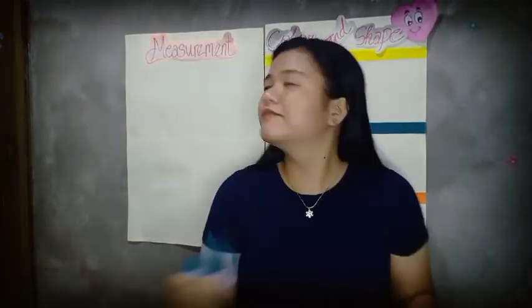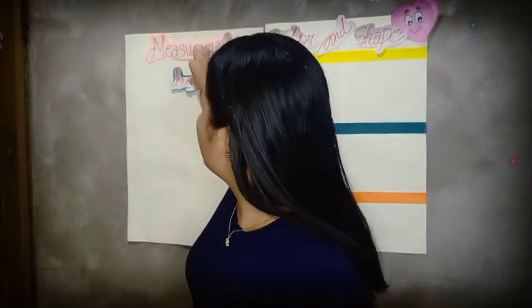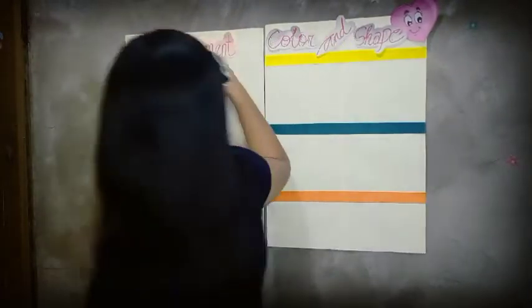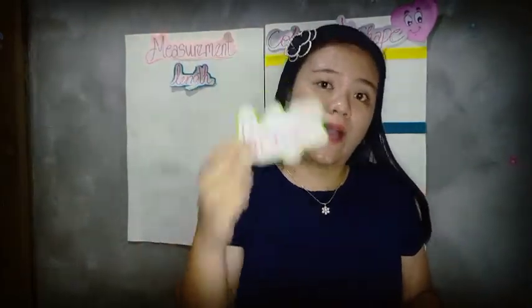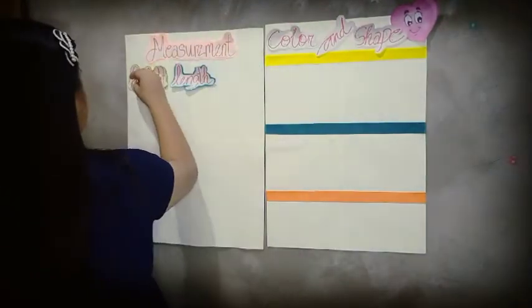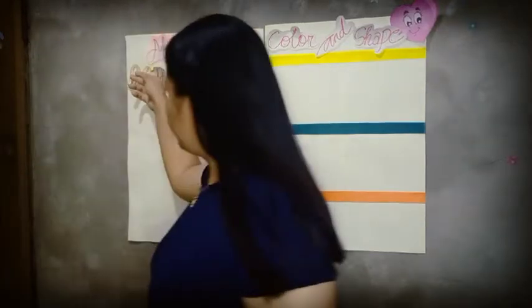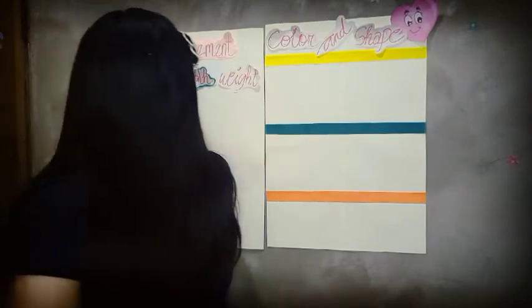In measurement, there are various ways to measure an object. From our magic box, we have length — we will paste that here on our attributes wall. We also have height, and the last one is weight. Measurement is composed of three ways to measure an object: height, length, and weight.